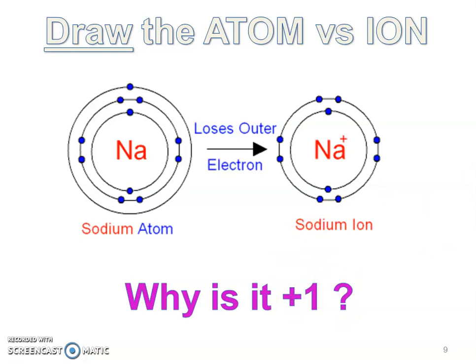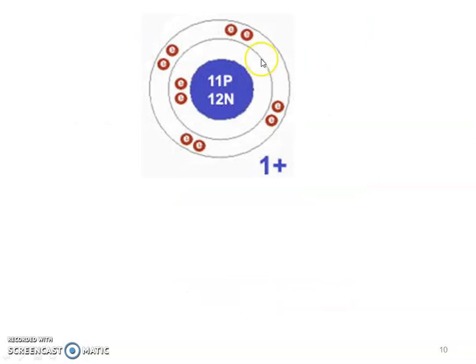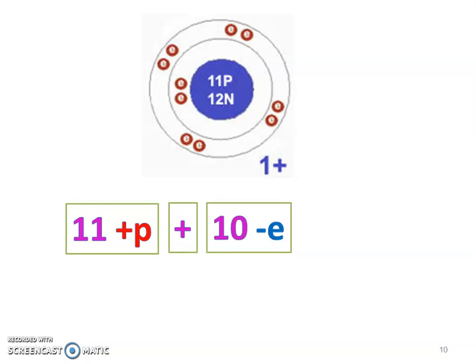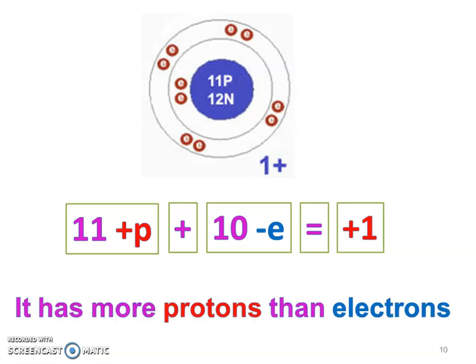Where does that plus one come from? The ion has 11 protons — 11 positive protons — that never changes. But when the atom became an ion it only has 10 negative electrons. So: 11 positive protons and 10 negative electrons gives us that plus one charge. You don't have to do this math because I'm going to show you a pattern on the periodic table. The fact that it has more protons than electrons — one more — is where that plus one comes from.